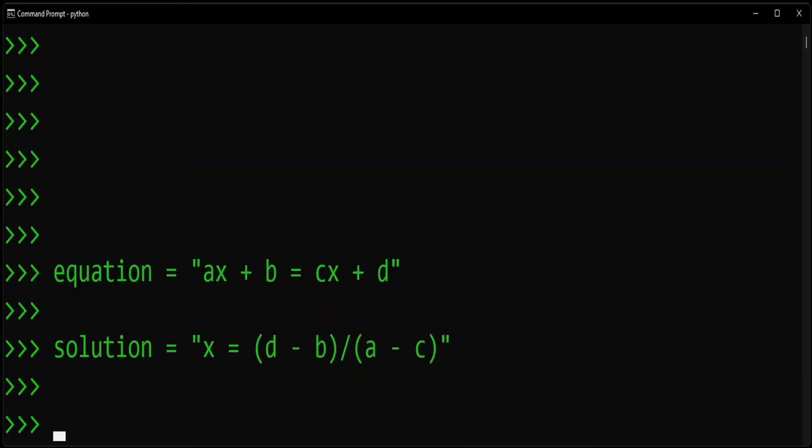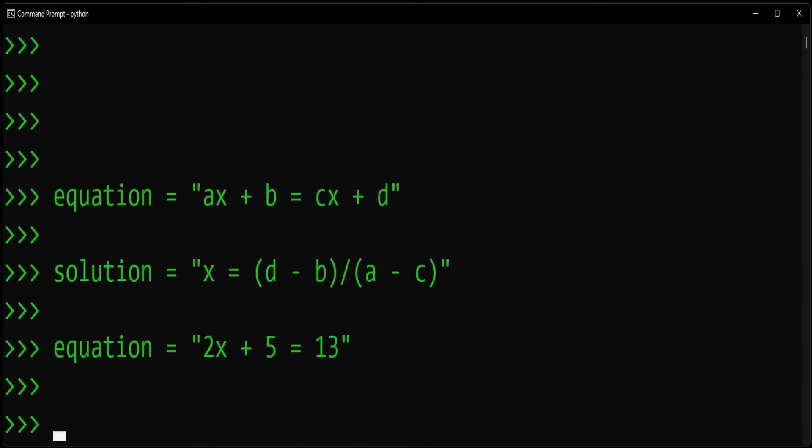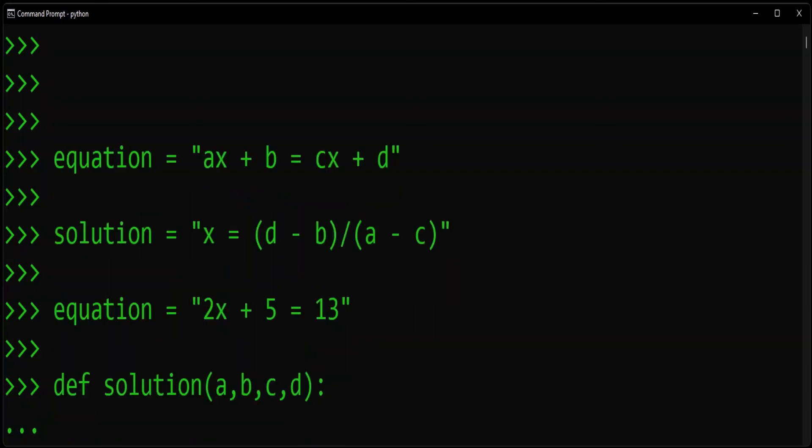So let's use that information to solve for the equation that we had before. 2x plus 5 is equal to 13. So now I'm going to write the solution function again. And this time I'm going to give it some input. We're going to give it a, b, c, and d. This time all I want this function to do is return d minus b divided by a minus c.